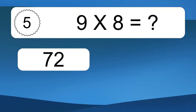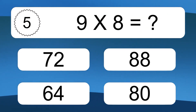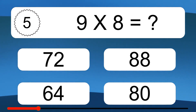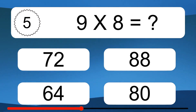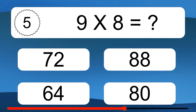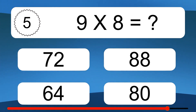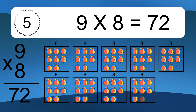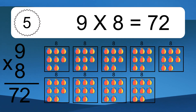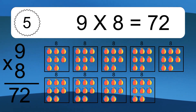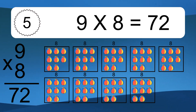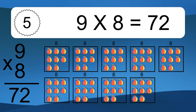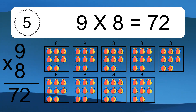9 times 8 equals what? 9 times 8 equals 72. We have 9 boxes, and each box has 8 colorful balls inside. If you count all the balls in all the boxes together, you will have 9 times 8 balls. This equals 72 balls.